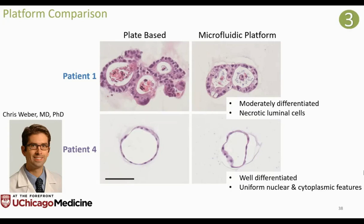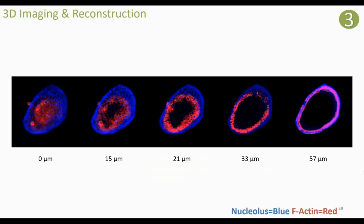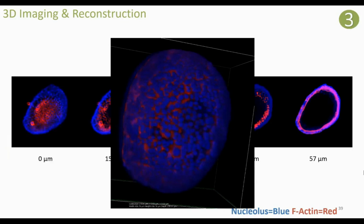On this platform, we are able to not only fix and stain organoids but also take different image slices — Z-stack acquisition — which allows us to do a complete 3D reconstruction of these organoids on the platform. Here we go from 0 micrometers to 57 micrometers in different image slices, and you can see how the organoid is hollow on the inside. Through these images and confocal imaging, we can create 3D reconstructions like this.